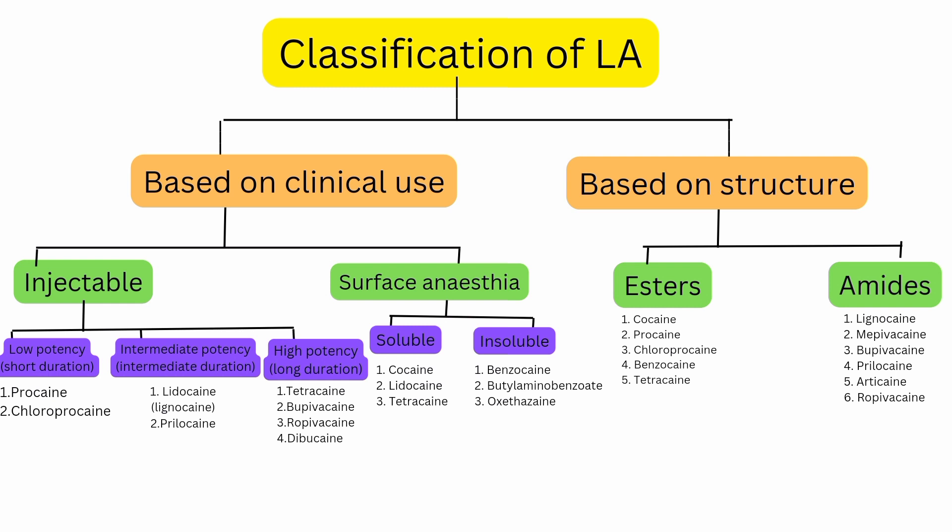Lignocaine is an intermediate potency injectable and also a soluble surface anesthesia. It is vastly used in dentistry — for maxillary injections when treating the apex of a tooth, to anesthetize the mucous membrane of the oral cavity, during scaling when there is pain, as a surface anesthesia, for papillary infiltration, root procedures, abscess drainage, and suturing of cut wounds. Procaine is also used for suturing of cut wounds.